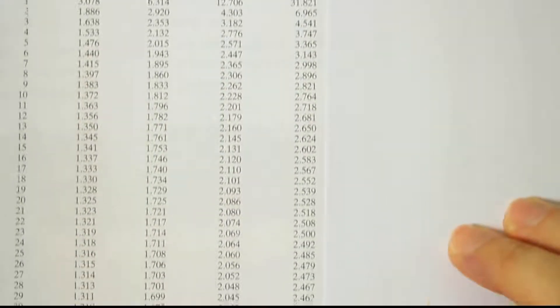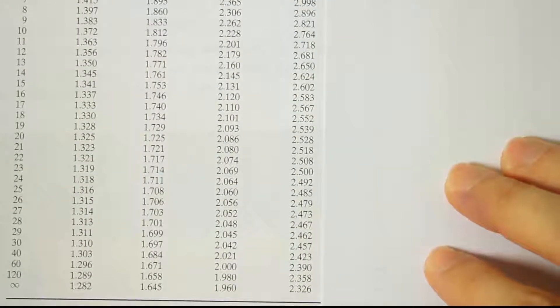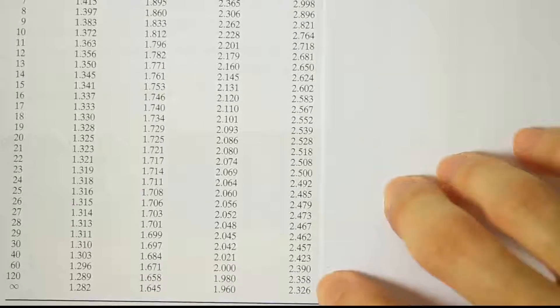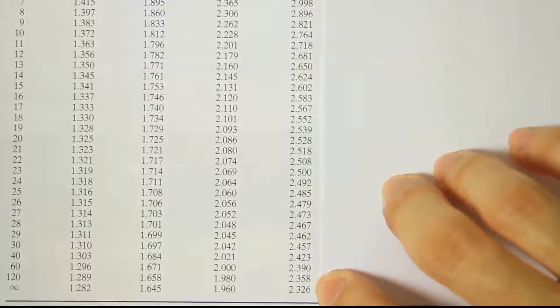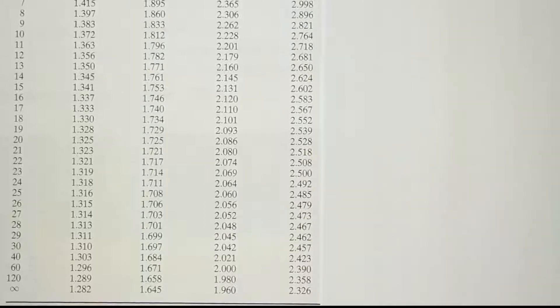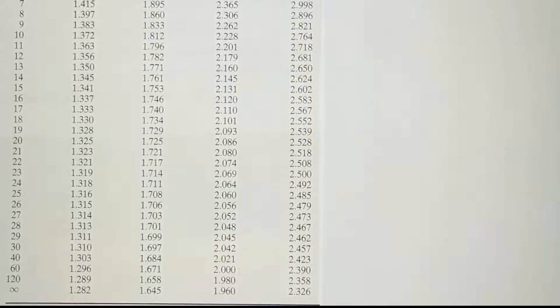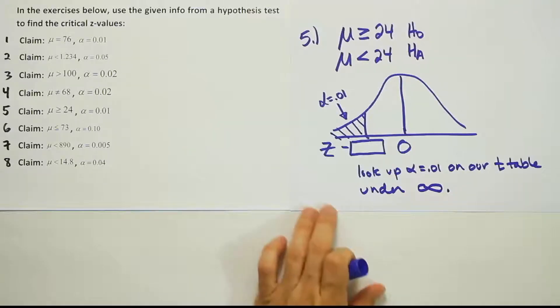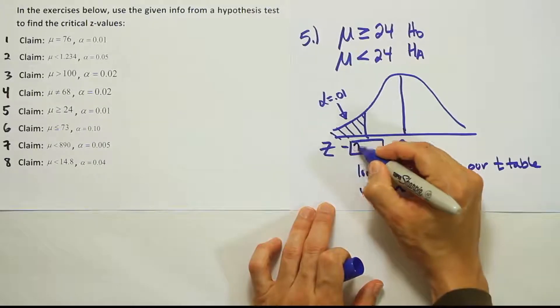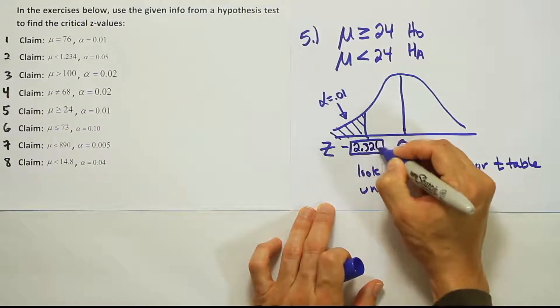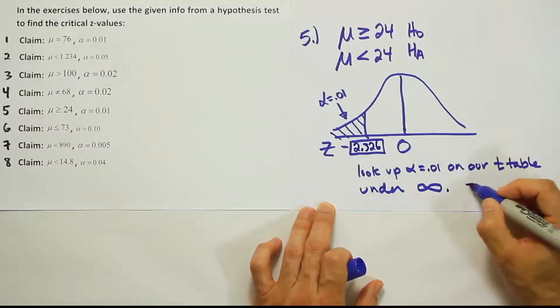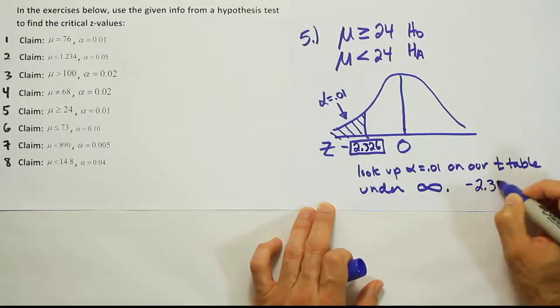And we find the answer to be 2.326. Okay, so we looked up alpha and we found the answer to be negative 2.326. So our critical value is negative 2.326.